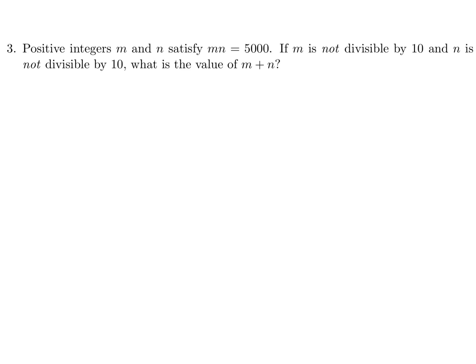Positive integers m and n satisfy m times n equals 5,000. If m is not divisible by 10 and n is not divisible by 10, what is the value of m plus n?